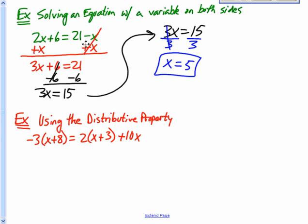3 over 3 is 1x. So x equals 5. That's how you solve an equation with a variable on both sides. You get all the like terms on one side with the variable. Gather all the variables on one side, all the numbers on the other, and finish it off with one of those properties.